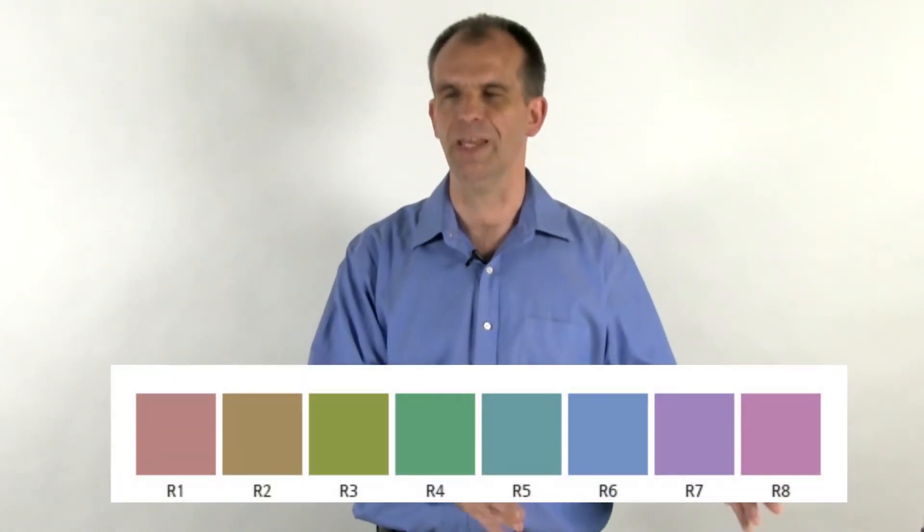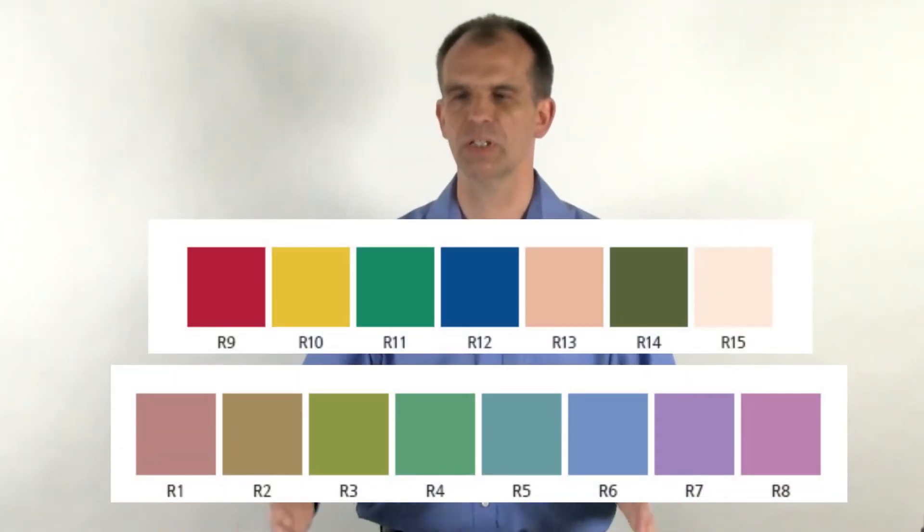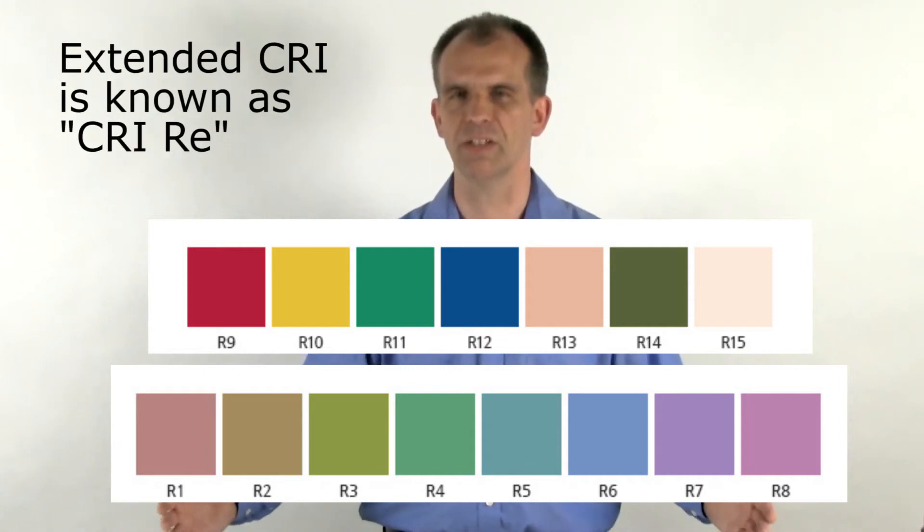So people have developed alternatives to CRI. In one case, you have extended CRI, which basically becomes a palette of 15 colors. You take the original eight and you add seven saturated colors and you calculate extended CRI. That's a very useful metric.